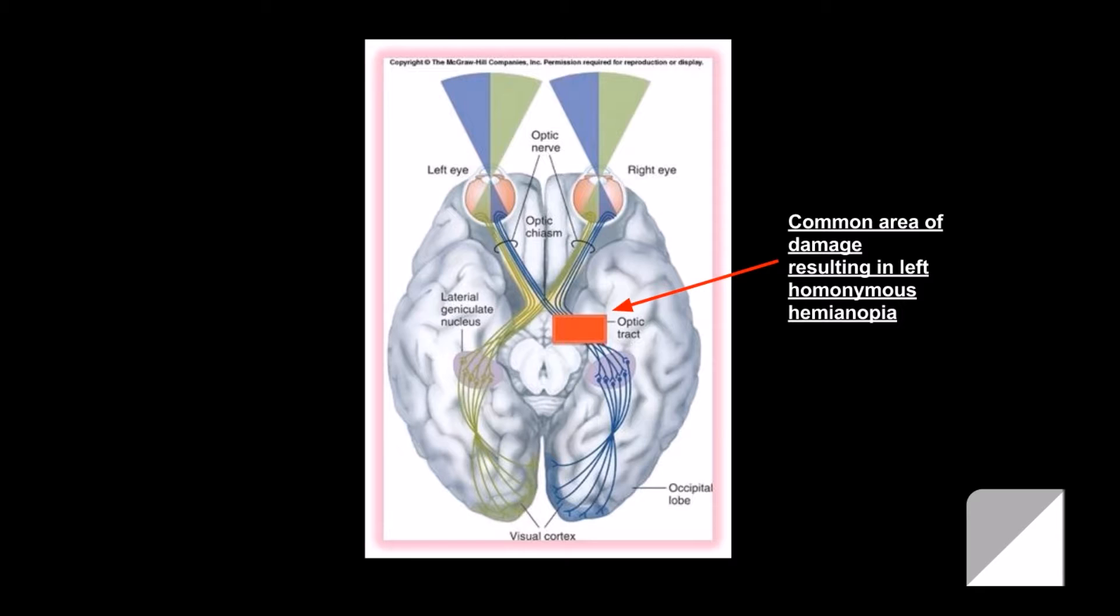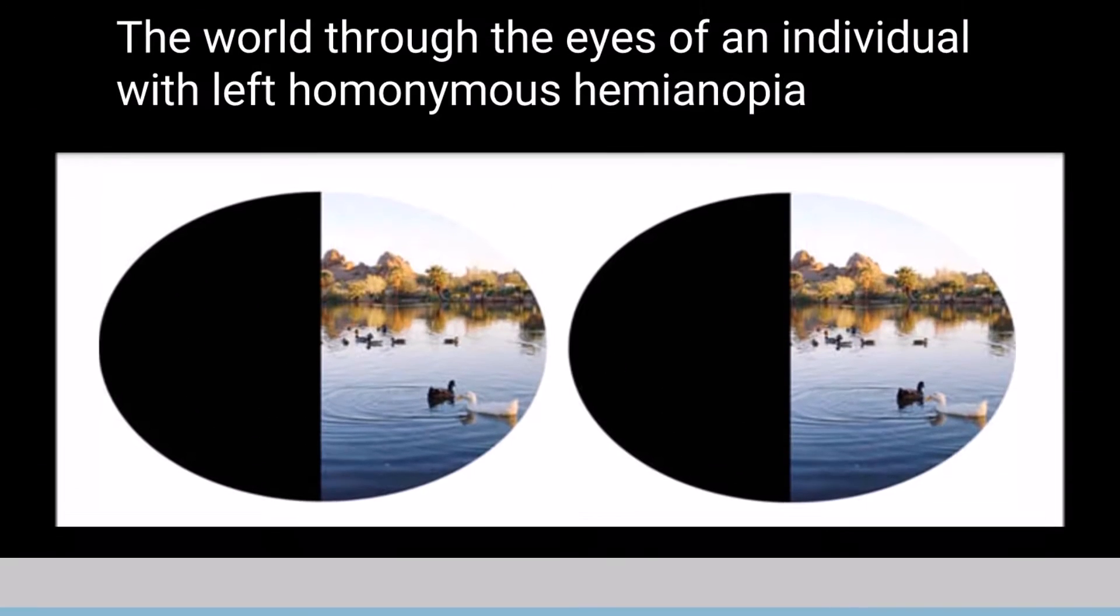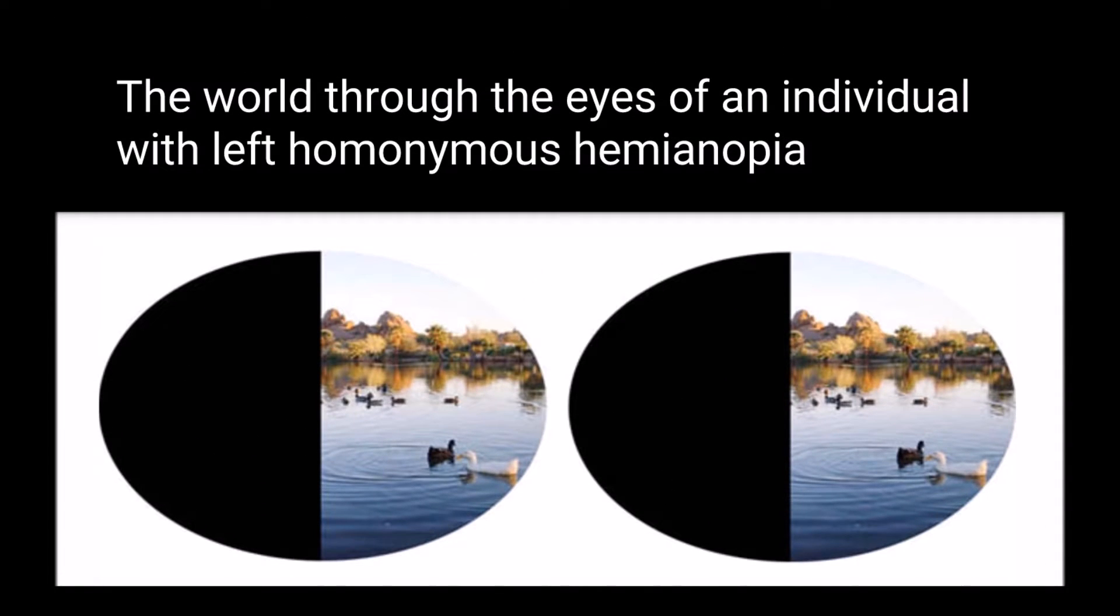Other possible causes include brain tumors and traumatic brain injuries. People with homonymous hemianopia lose the ability to perceive visual stimuli in one half of their visual field. Left homonymous hemianopia is most common.